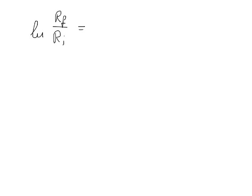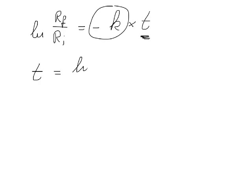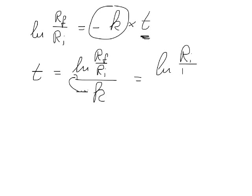Why is this the case? Looking at our equation: ln(R_final / R_initial) equals minus k times t. To solve for t, we bring minus k to the other side and get t equals ln(R_final / R_initial) divided by minus k, which we can rewrite using logarithm rules as t equals ln(R_initial / R_final) divided by k.